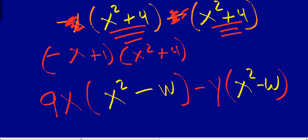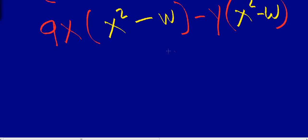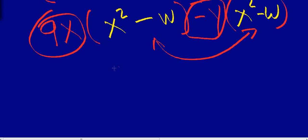Another example here. These are common binomials, x squared minus w. And sometimes it helps to circle what you want to put in your first set of parentheses. So you got 9x minus y times x squared minus w. So even if there's a bunch of numbers, don't let those numbers confuse you.